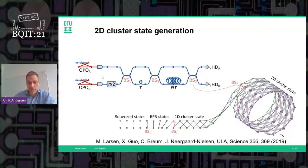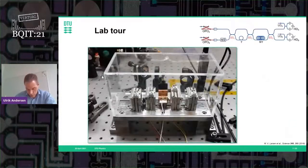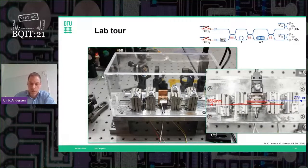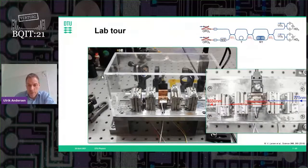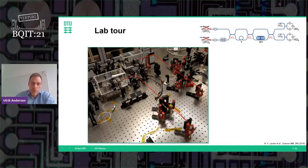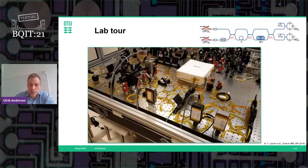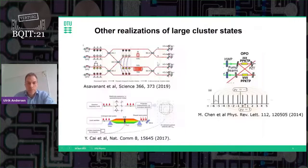For a quick lab tour: we use bulky optical parametric oscillators, but they produce nice clean squeezed states. We generate squeezed light at the telecom wavelength of 1550 nanometers, which means different computing modules can be easily connected. We couple the light into optical fibers right after the OPOs, so the rest of the setup is in fibers — the short delay of 50 meters is here, the long delay of 600 meters is in this box, and the homodyne detectors are shown on the left.